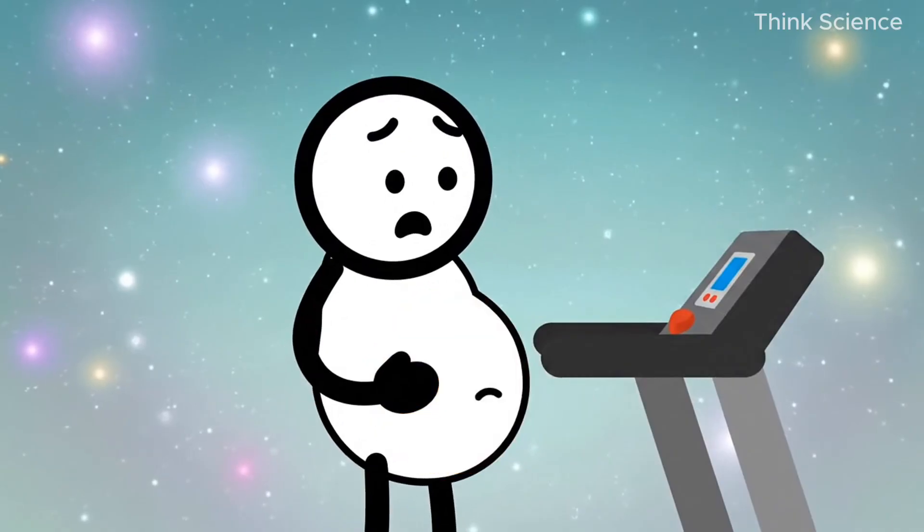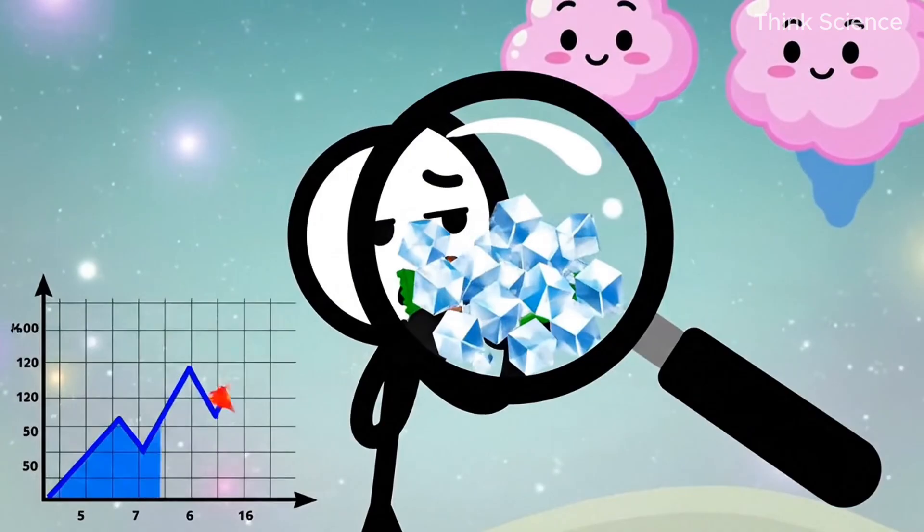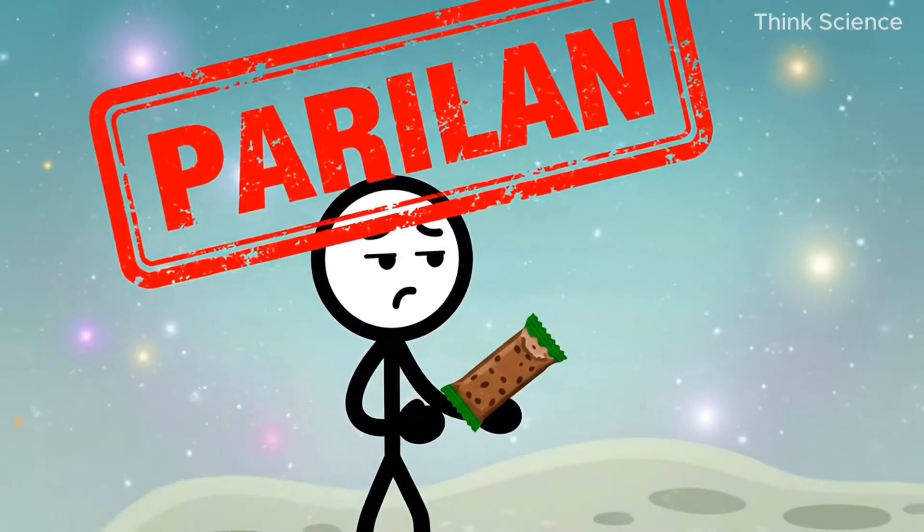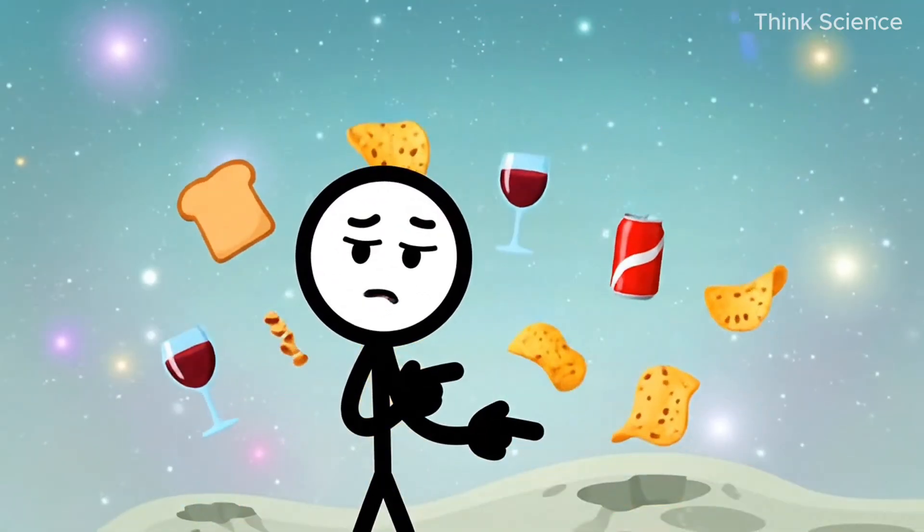After every workout, he ate a protein bar that looked healthy but was loaded with sugar. That tiny spike in insulin told the body, store energy, and it canceled his entire workout window. That's how sensitive this system is.